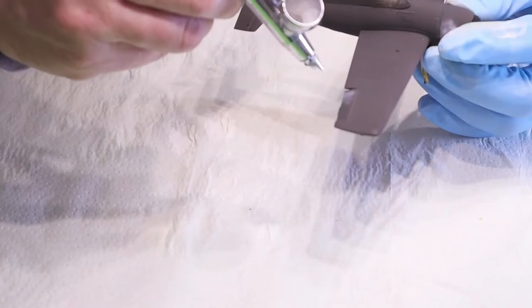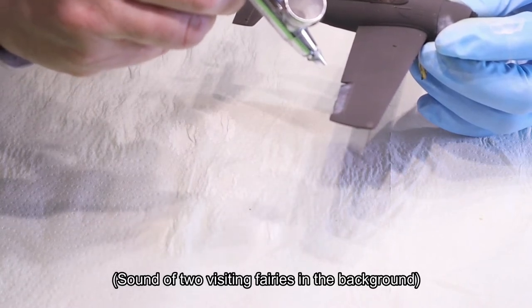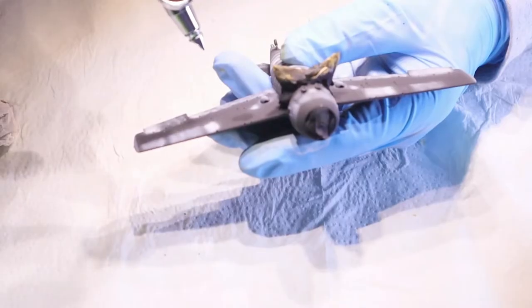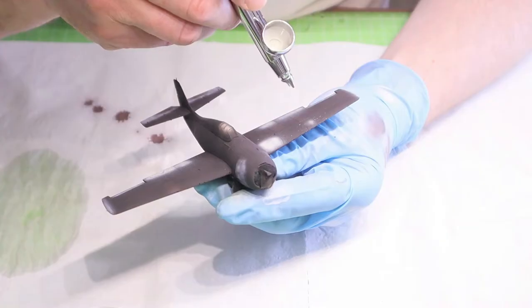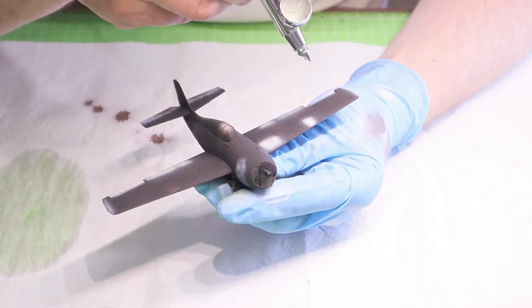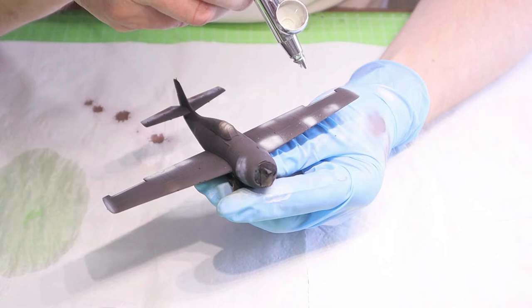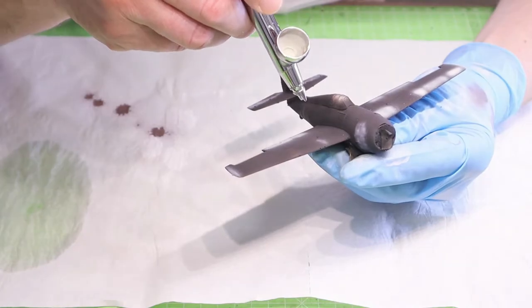As the first color of the pre-shading, I used the Vallejo model colors white. Just a simple white. After that, I switched to some kind of a dark chocolate brown and then light gray green. And with all the paints, I'm always trying to do a random pattern. Don't do it similar on both wings on the same panels. Try to do it randomly. It will look much more natural.